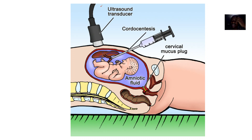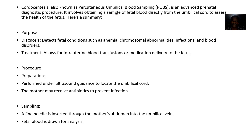You want to do this test prenatally — that is, before the baby is born — to test for things like blood group typing and other conditions. It involves obtaining a sample of fetal blood directly from the umbilical cord to assess the health of the fetus. The purpose is diagnosis of fetal conditions like anemia, chromosomal abnormalities, infections, and blood disorders.